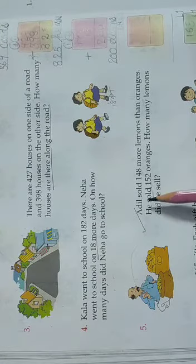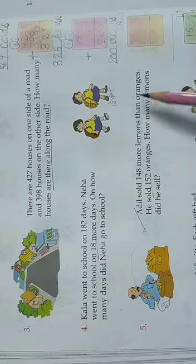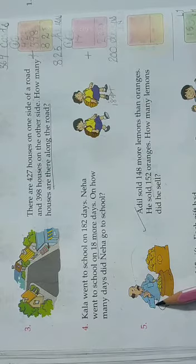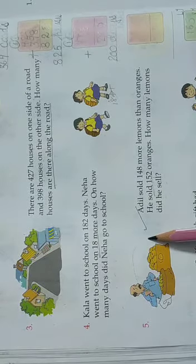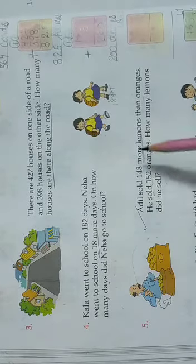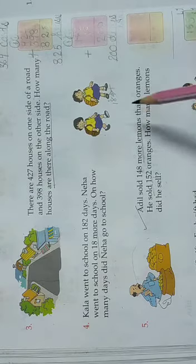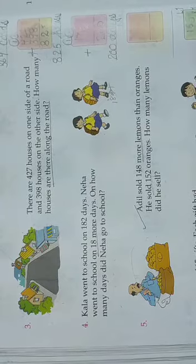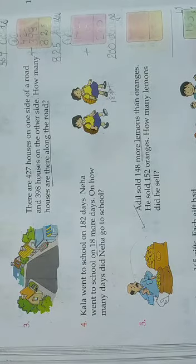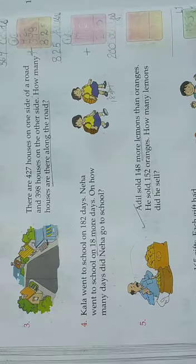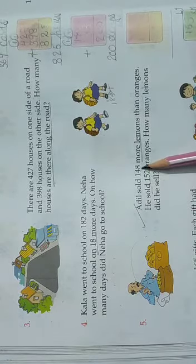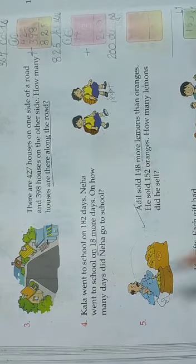Aadil sold 148 more lemons than oranges. First see the picture. We can see a man whose name is Aadil. And what is he doing? He is selling fruits. So he sold 148 more lemons compared to oranges. Because oranges are big - for 1 case you will get 5 to 6 pieces. But lemons are small. If you buy 1 kg, you'll get about 20. So Aadil, compared to oranges, sold more lemons. How much more? 148 more.